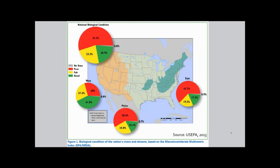Geographically across the United States, we see that water quality is generally better in the western part of the country, where only 30% of water bodies were rated as poor. In the middle part of the country, nearly 60%. And in the eastern highlands as well as the Ozarks, more than 60% of surface waters were judged to be in poor condition.